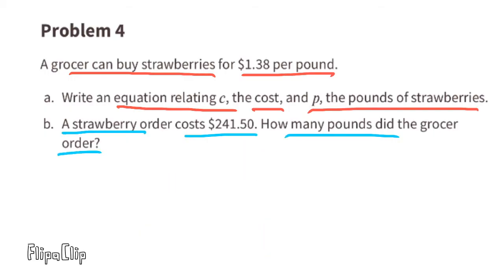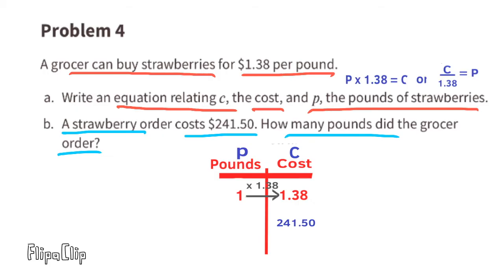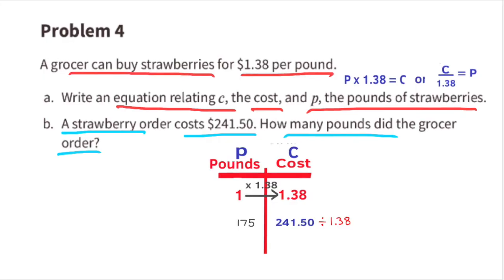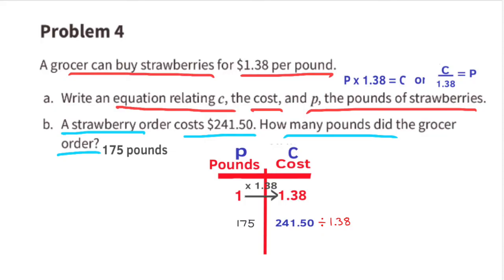Part b — a strawberry order cost $241.50; how many pounds did the grocer order? We can ask what number times 1.38 equals 241.50, or compute 241.50 divided by 1.38, which gives us 175. So the grocer ordered 175 pounds of strawberries at $1.38 per pound, totaling $241.50.